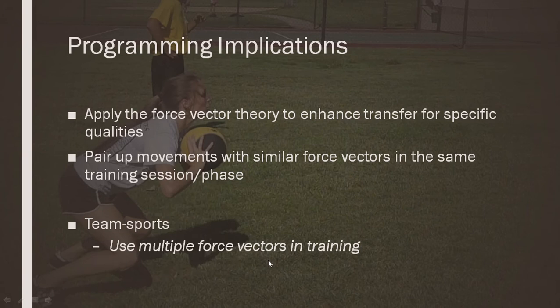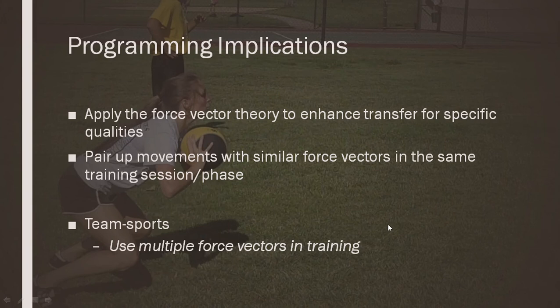For example, if we have two speed and power days, we might have one day where we do primarily horizontal type exercises — horizontal jumping, horizontal throwing, maximal speed, that sort of thing. And then if we have a vertical training session, we can do more back squatting, vertical jumping, and vertical throws and things like that.